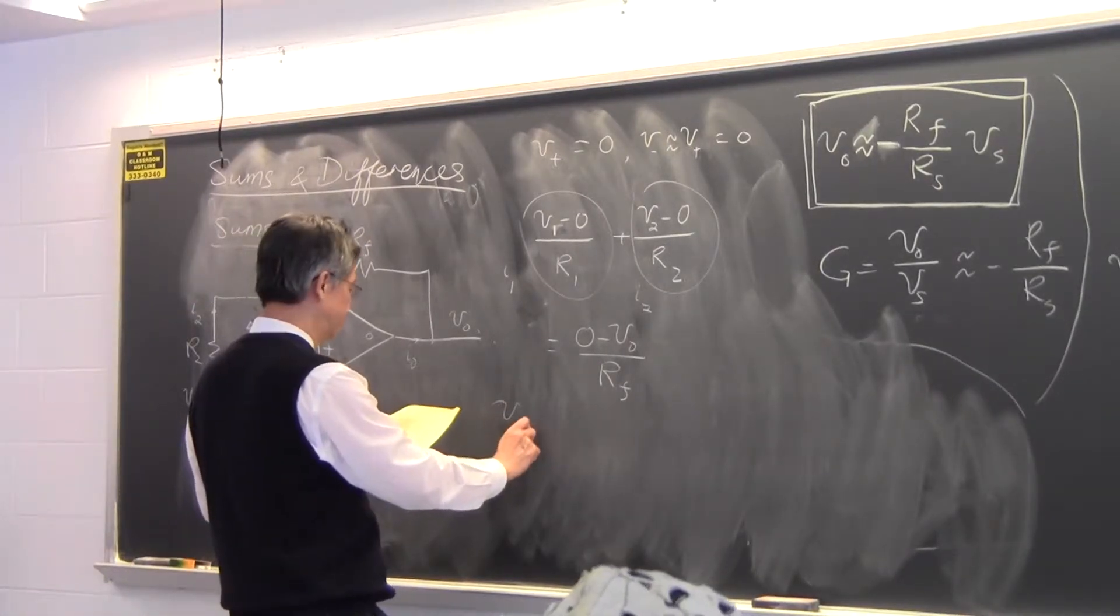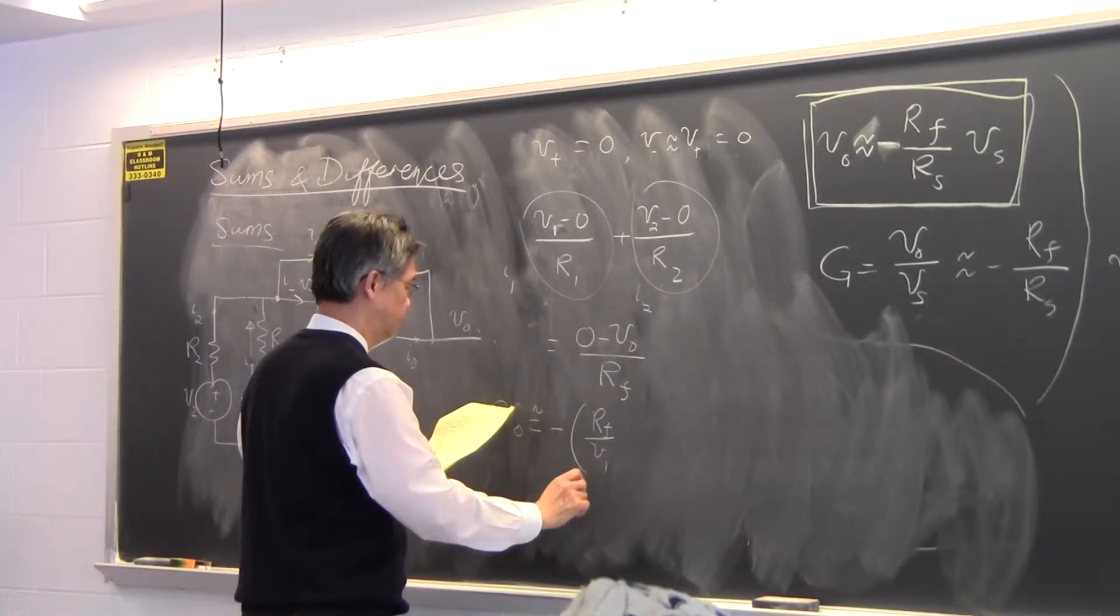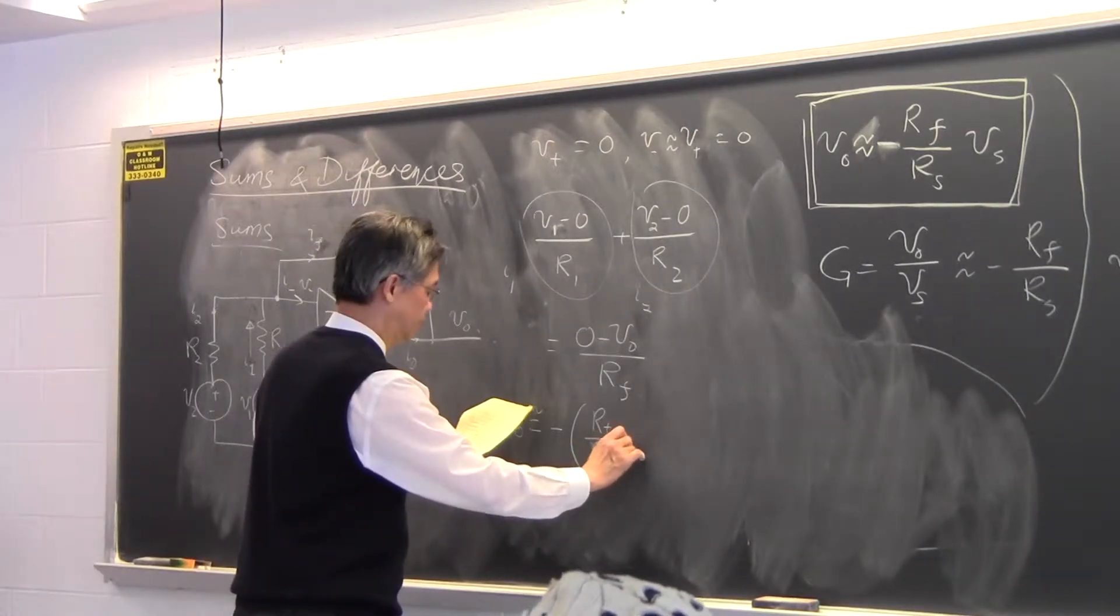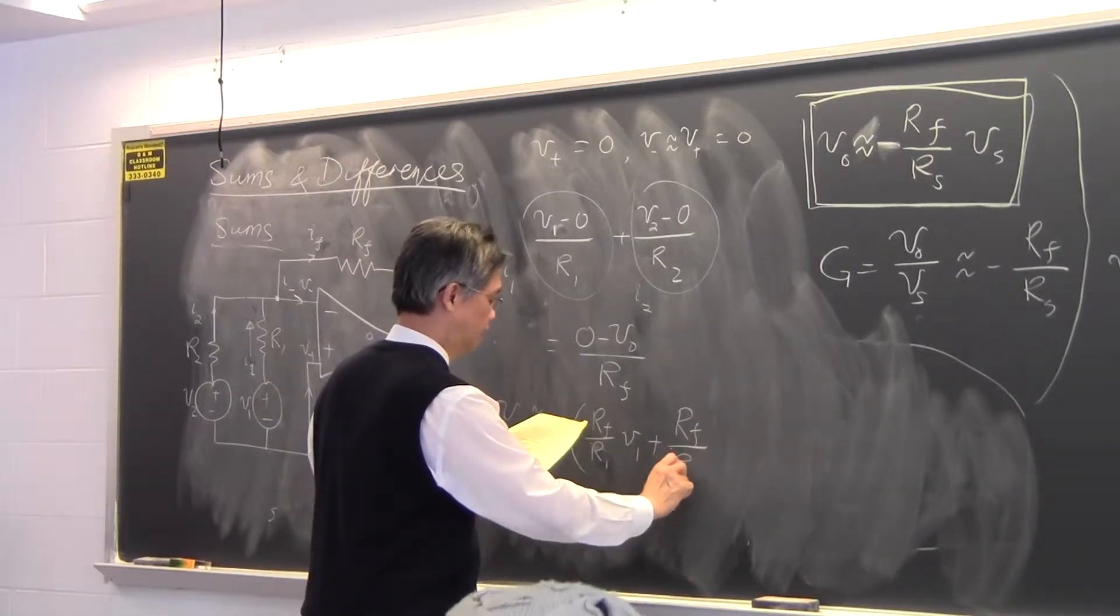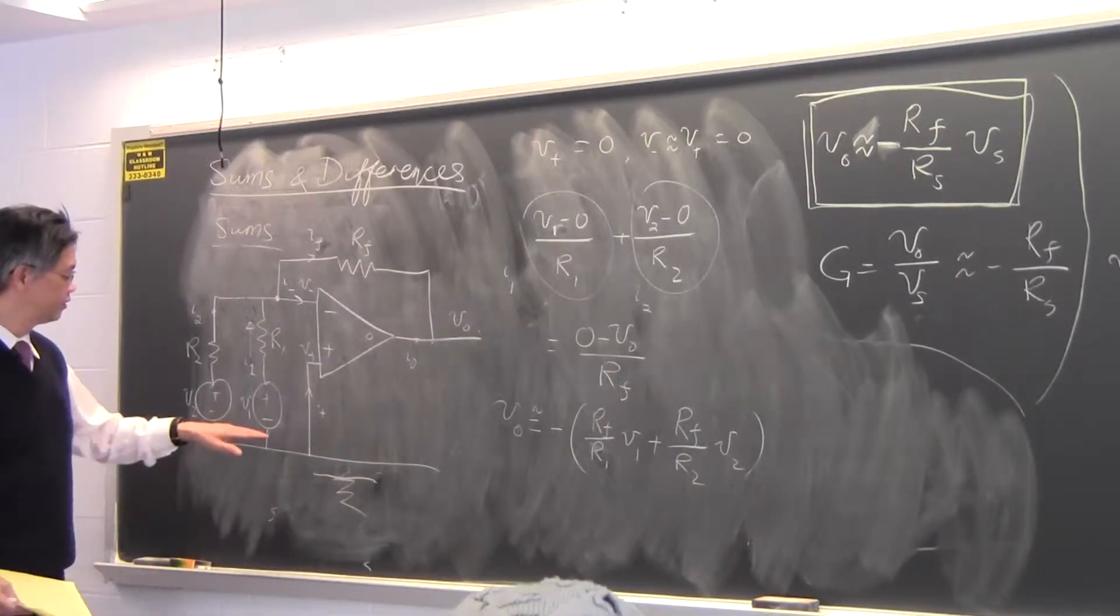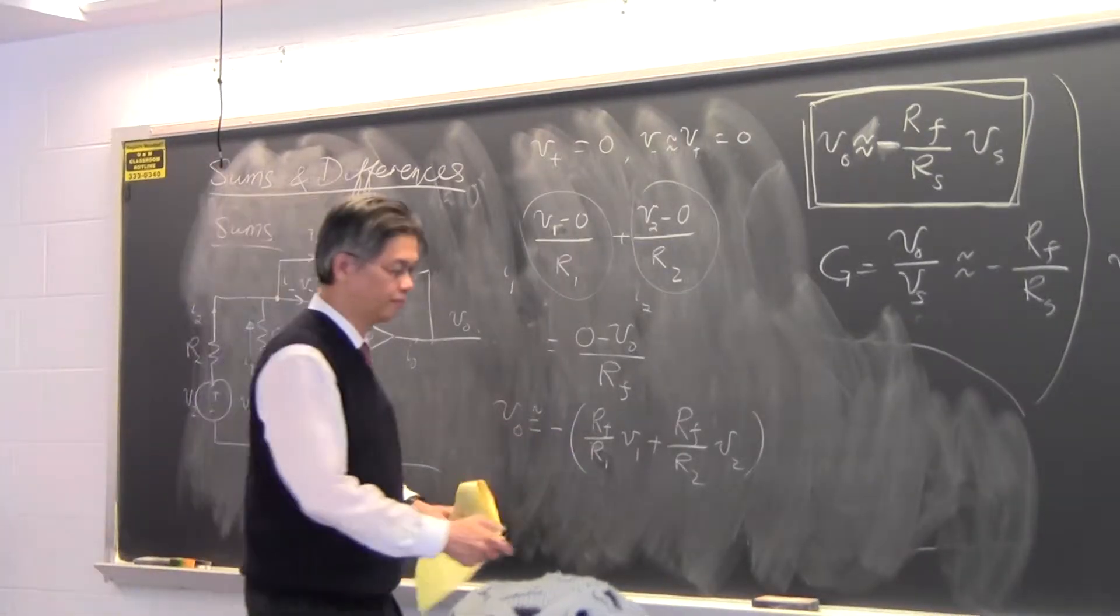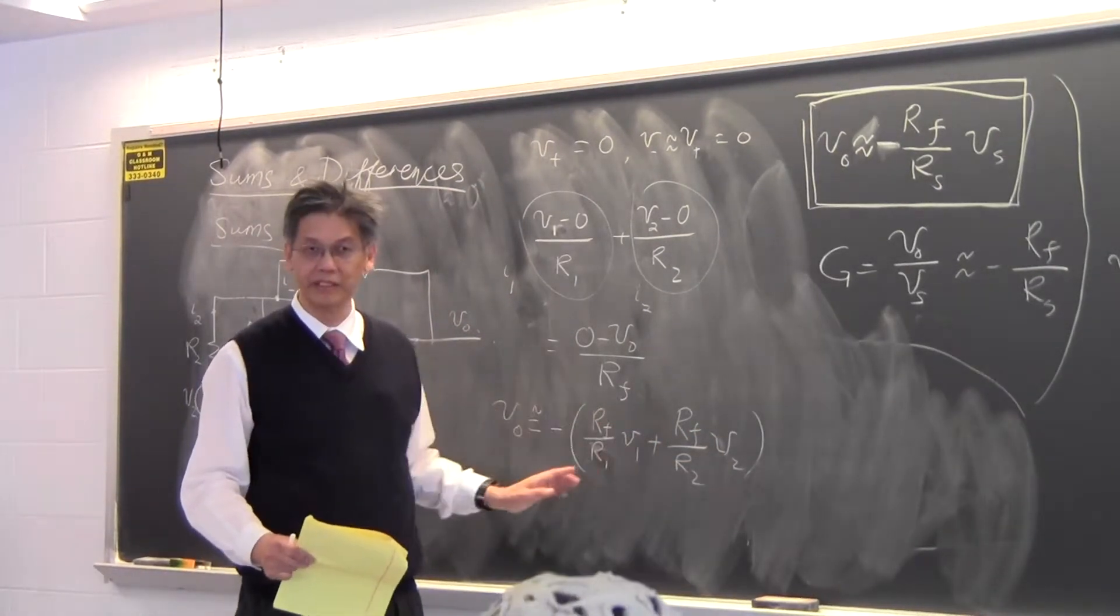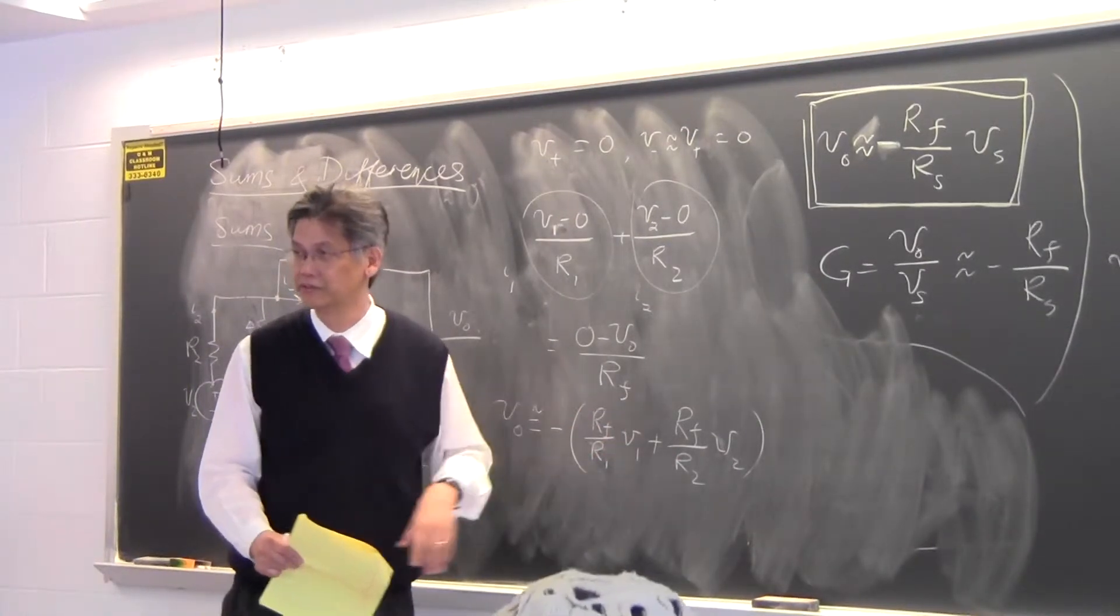V0 is equal to minus RF over R1 times V1 plus RF over R2 times V2. So you can see that V0 is the sum of these two voltages. You can adjust your RF and R1 to change this sum. You can make RF over R1 equal to one and get the sum of two voltages. If you don't like those weighting numbers, you can adjust your parameters.